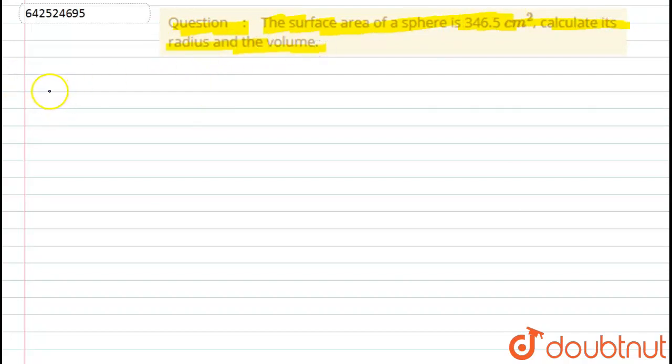So let's start with the solution. First of all, what is given here? Here we have given the surface area, surface area of sphere, of sphere that is nothing but is equals to 346.5 cm² and we have to find radius and volume.